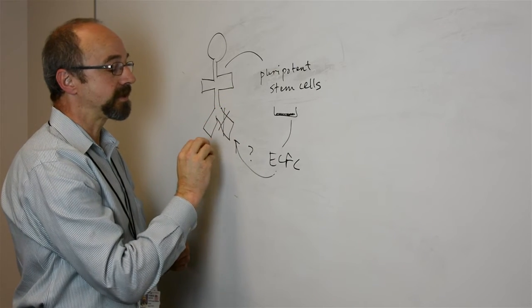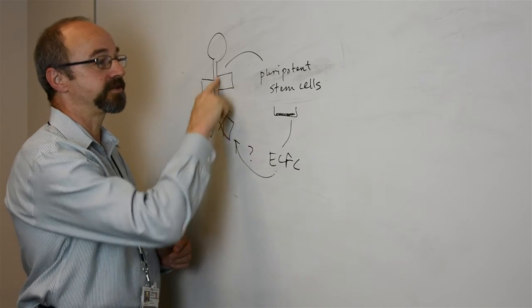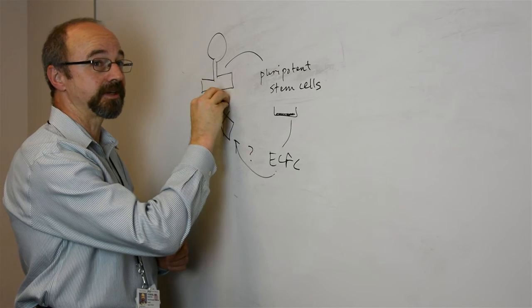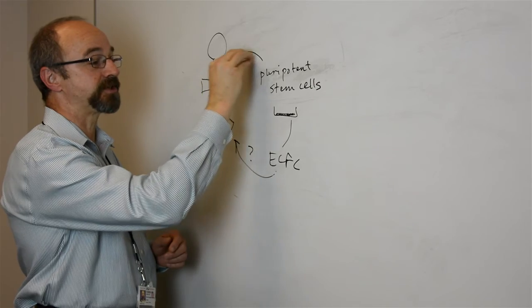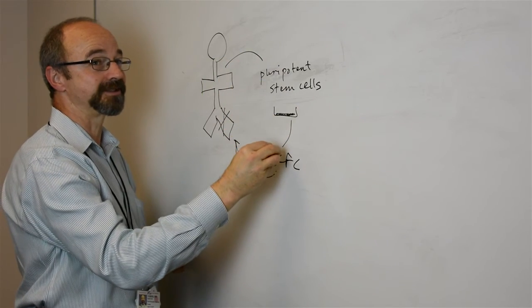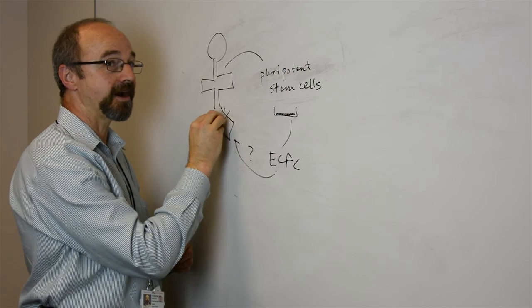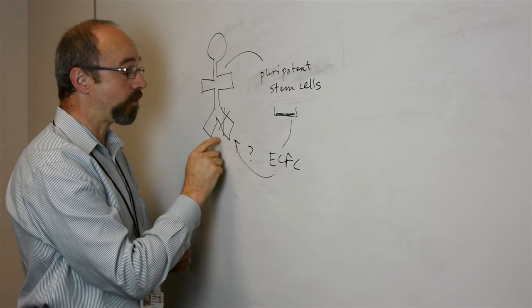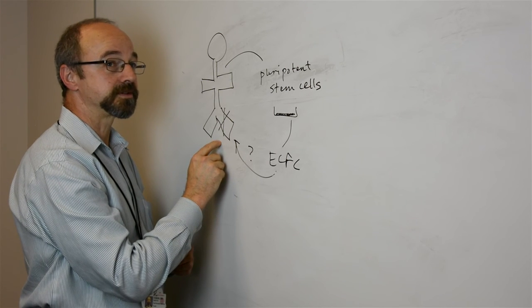This is the problem we're attempting to solve. This is the approach. This would be a patient-specific, personalized approach where you'd actually be generating their own cells outside of the body that could potentially repair the damaged blood vessels they have because their own circulating cells are no longer capable of doing so.